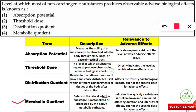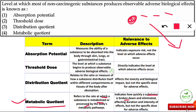The final term is metabolic quotient. It refers to the rate at which a substance is metabolized or processed by the body's metabolic pathways. Once inside our body, the metabolic quotient describes how quickly the substance is broken down and eliminated. It indicates how quickly a substance is broken down and removed from the body, affecting the duration and intensity of the effect — but not the specific dose at which adverse effects occur.